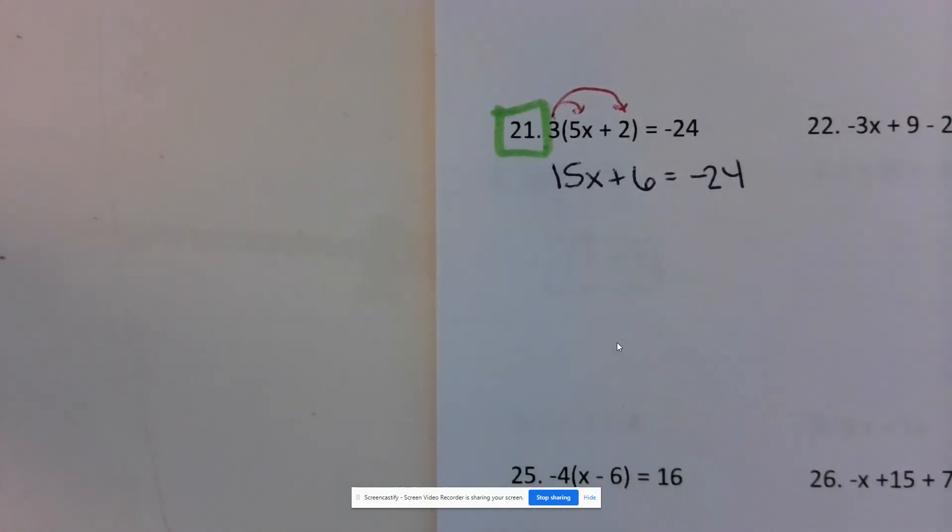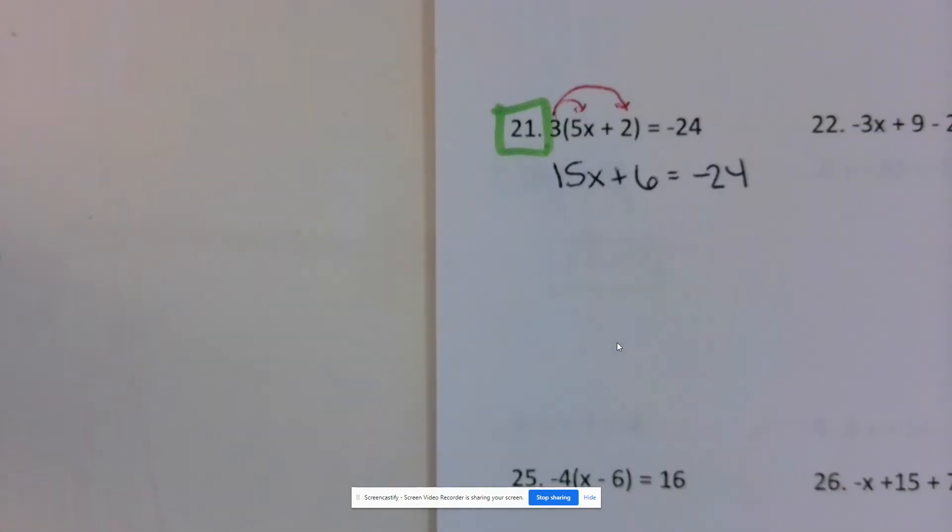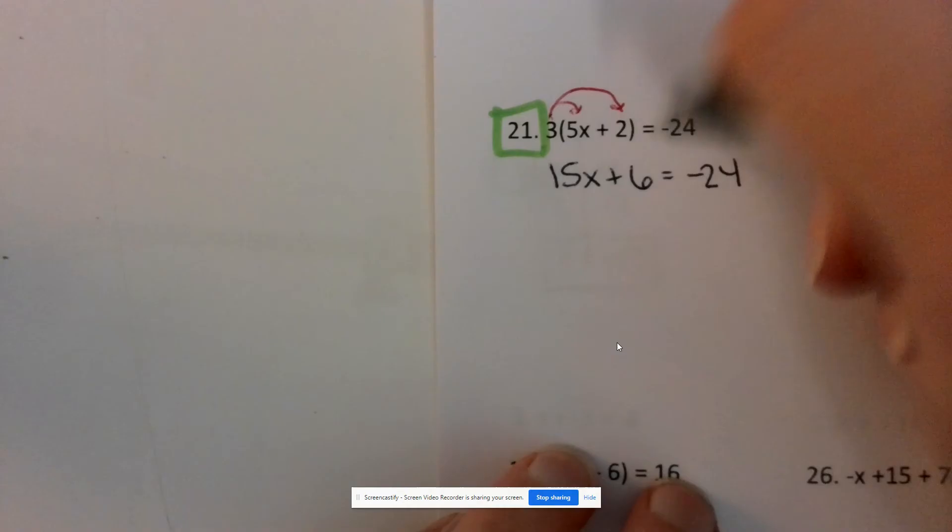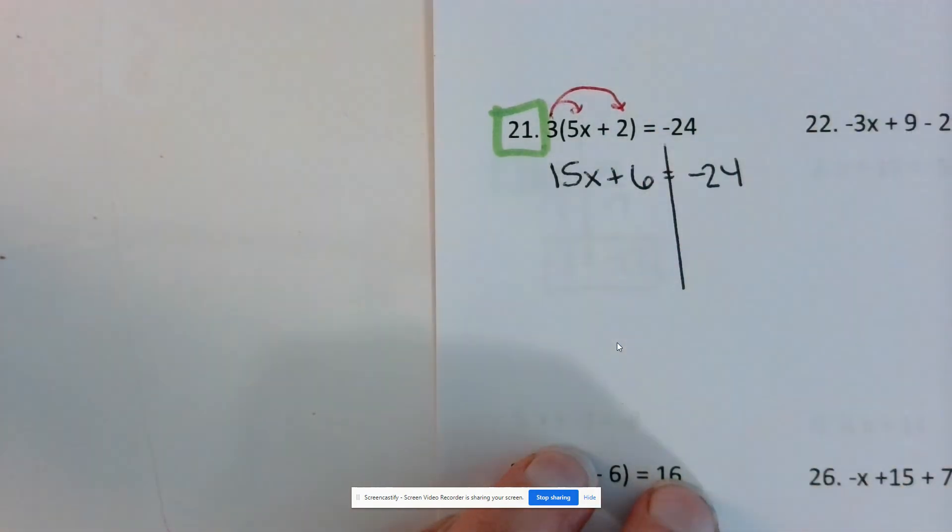There's another step you could have taken, and we can talk about that during our Q&A time. If anyone else has a different idea other than the distributive property, what you could have done instead to start out. But we'll go with this method. So now I have this two-step equation: 15x plus 6 equals negative 24.